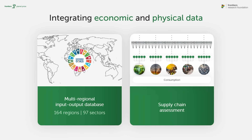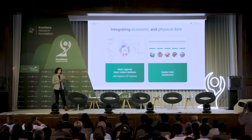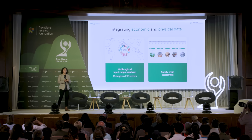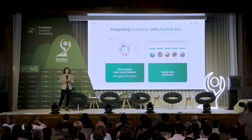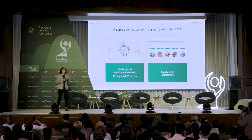To assess global supply chain networks, it starts with data on international trade — information on exports, imports, and what is traded. We had information for 164 regions of the world: 160 individual countries and four aggregated regions. For each of those, we had data on 97 sectors — agricultural sectors broken down into different commodities, manufacturing sectors, energy sectors, and service sectors.